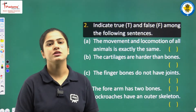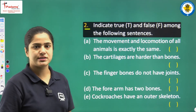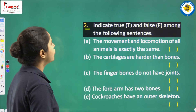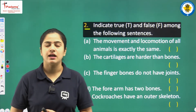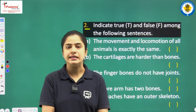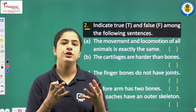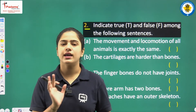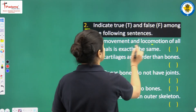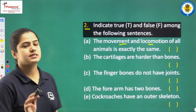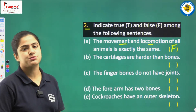Moving to the second question — true and false. Indicate true or false for the following statements. First statement: the movement and locomotion of all animals is exactly the same. Think about it — in our three lectures we studied the gaits of animals and how humans move. Is the locomotion process the same for all animals? No, students, this is false. It is not the same — it is different in every case.